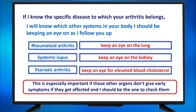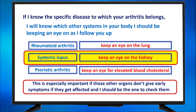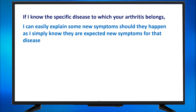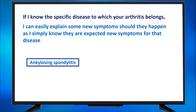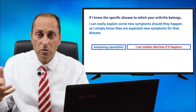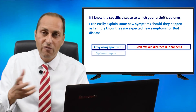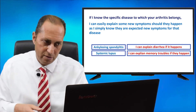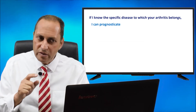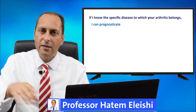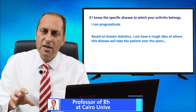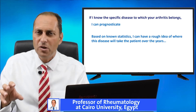This is very relevant in the condition of a patient with lupus who never had kidney affection — we keep an eye on the kidney and keep checking kidney functions. Another benefit: if I know the specific disease, I can easily explain new symptoms should they happen, as I know they are expected for that disease. If you have ankylosing spondylitis, I can explain diarrhea if it happens because ankylosing spondylitis causes colitis. If you have lupus, I can explain memory troubles. Also, if I know the specific disease, I can prognosticate — based on known statistics, I can have a rough idea of where this disease will take the patient over the years.